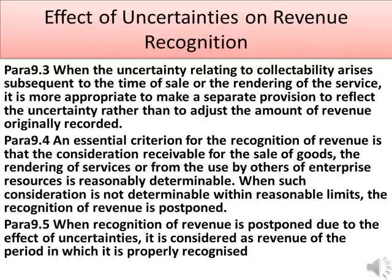Para 9.3: When the uncertainty relating to collectability arises subsequent to the time of sale or the rendering of the service, it is more appropriate to make a separate provision to reflect the uncertainty rather than to adjust the amount of revenue originally recorded. Para 9.4: An essential criterion for the recognition of revenue is that the consideration receivable for the sale of goods, the rendering of services, or from the use by others of enterprise resources is reasonably determinable. When such consideration is not determinable within reasonable limits, the recognition of revenue is postponed. Para 9.5: When recognition of revenue is postponed due to the effect of uncertainties, it is considered as revenue of the period in which it is properly recognized.